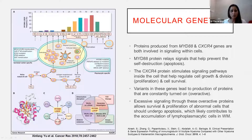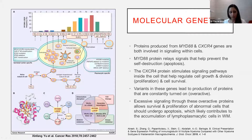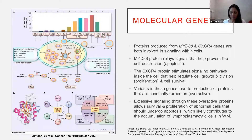We see these mutations across the board, but the MYD88 mutation is more common in Waldenström's macroglobulinemia — it is the hallmark of this disease. Nowadays, we have the ability in molecular labs to test for the MYD88 gene mutation to confirm its presence in our lymphoma patients.